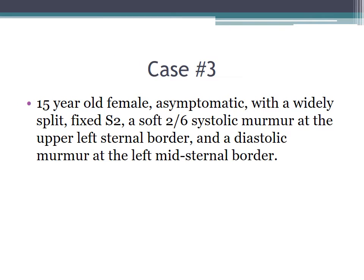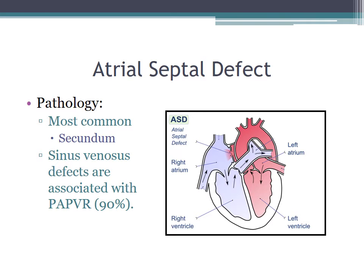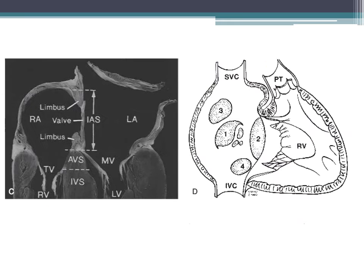Case three: a 15-year-old asymptomatic female with a widely split fixed S2, a short two out of six systolic ejection murmur at the upper left sternal border, and a diastolic murmur at the left mid-sternal border. This is an atrial septal defect. Females outnumber males. The most common type is secundum ASD. Sinus venosus defects are associated about 90% of the time with partial anomalous pulmonary venous return. Types include secundum (position 1), primum (position 2), sinus venosus (position 3), and coronary sinus ASD (position 4).